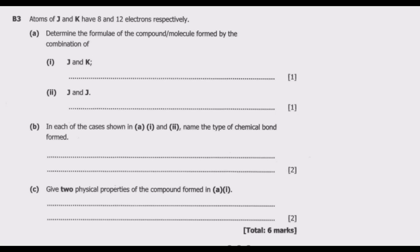Atoms of J and K have 8 and 12 electrons respectively. Question A: Determine the formulae of the compound or molecule formed by the combination of J and K, then J and J. To determine the formula we need to know the electronic configuration. Once we know the electron configuration we'll be able to know the valence.